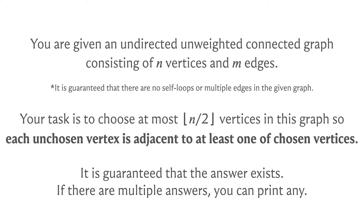The fact that the answer always exists can be interpreted in two ways. Either you're only given graphs that happen to have such a subset, or it could be universally true that any connected undirected unweighted graph on n vertices always has a dominating set of at most ⌊n/2⌋ vertices.